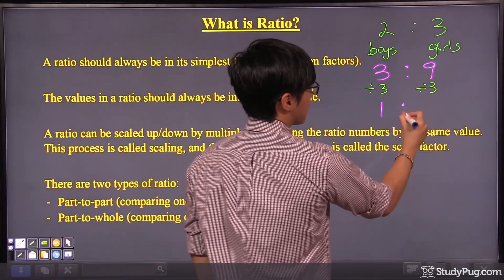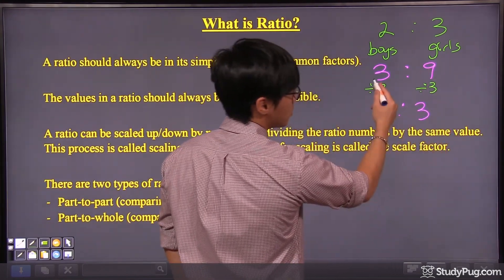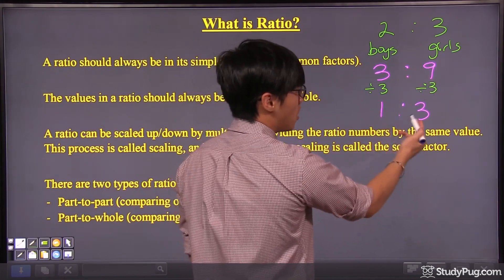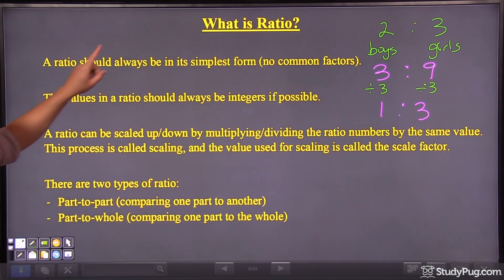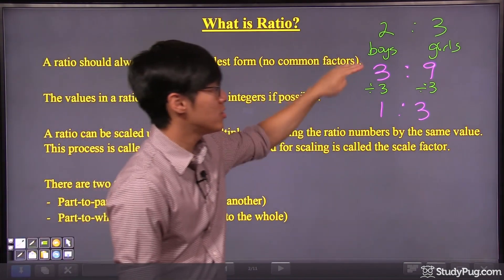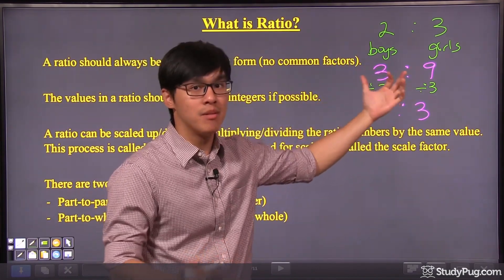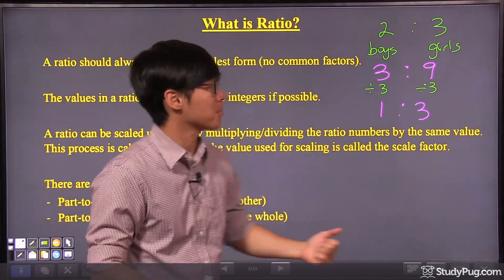So if we do so, if we divide three over here and we divide three over here, we will get our answer. Three divided by three, we get one. Nine divided by three, we get three. So three to nine can be further reduced to one to three. Make sure the ratio should always be in simplest form. So next time when you see two numbers which have some common factors, make sure you divide them to make them the reduced form.